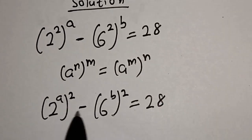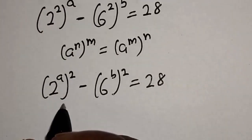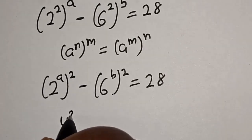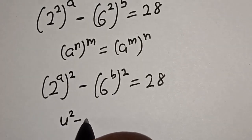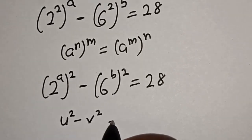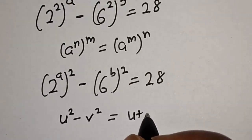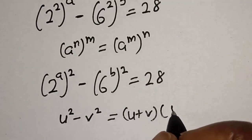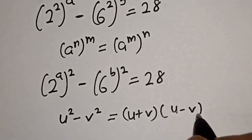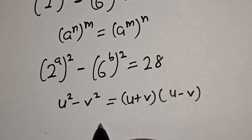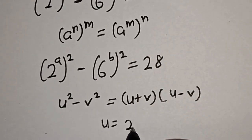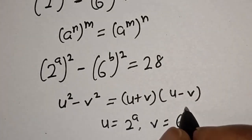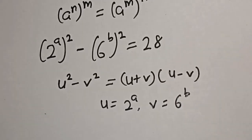If you look at this very well, this is a difference of two squares. That is, if you have u squared minus v squared, this is equal to u plus v multiplied by u minus v. In this case, u is equal to 2 to the power of a and v is equal to 6 to the power of b. Now let's substitute.